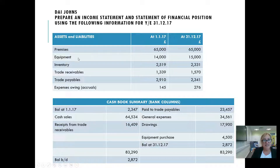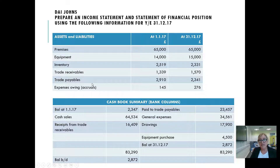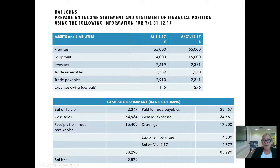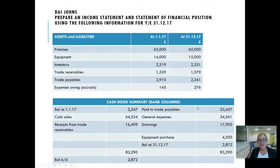You can see that Di has assets and liabilities. The premises, equipment, inventory, and trade receivables are all assets; trade payables and expenses are liabilities. But this isn't quite a complete list — Di had £2,347 in the bank at the start of the year. The bank column of the cashbook needs to be included in the list of assets when finding the missing capital figure. At the end of the year he had £2,872, which also needs to be included as an asset. In the exam they often give you a cashbook summary but the bank balance is not included in the list of assets and liabilities, so don't forget to include it.